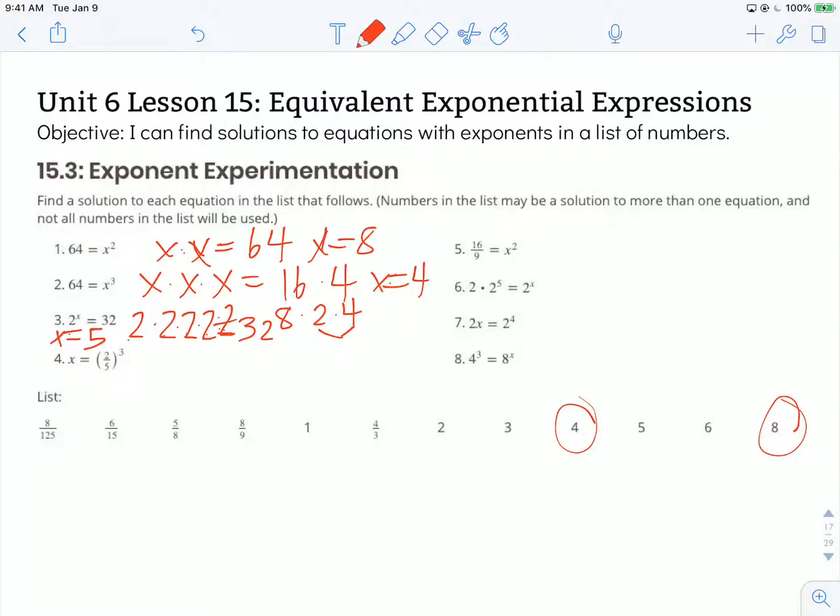Number 4, we have x is equal to 2/5 to the 3rd power, so 2/5. This means 2/5 times 2/5 times 2/5. So we know that 2 times 2 times 2 times 2 is, 2 times 2 is 4 times 2 is 8.